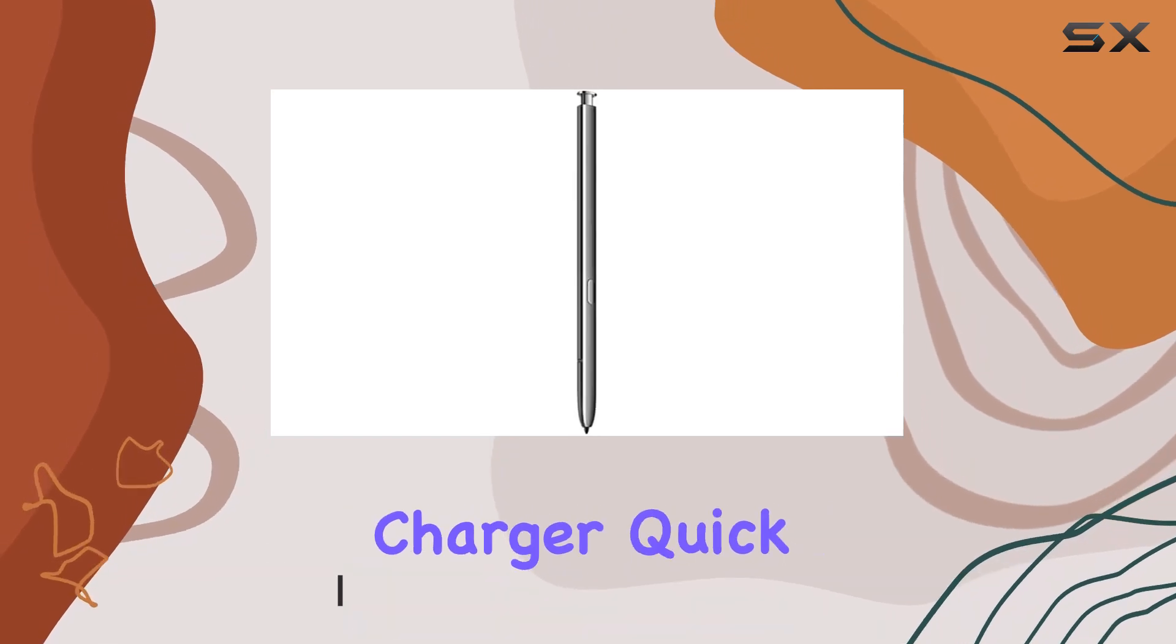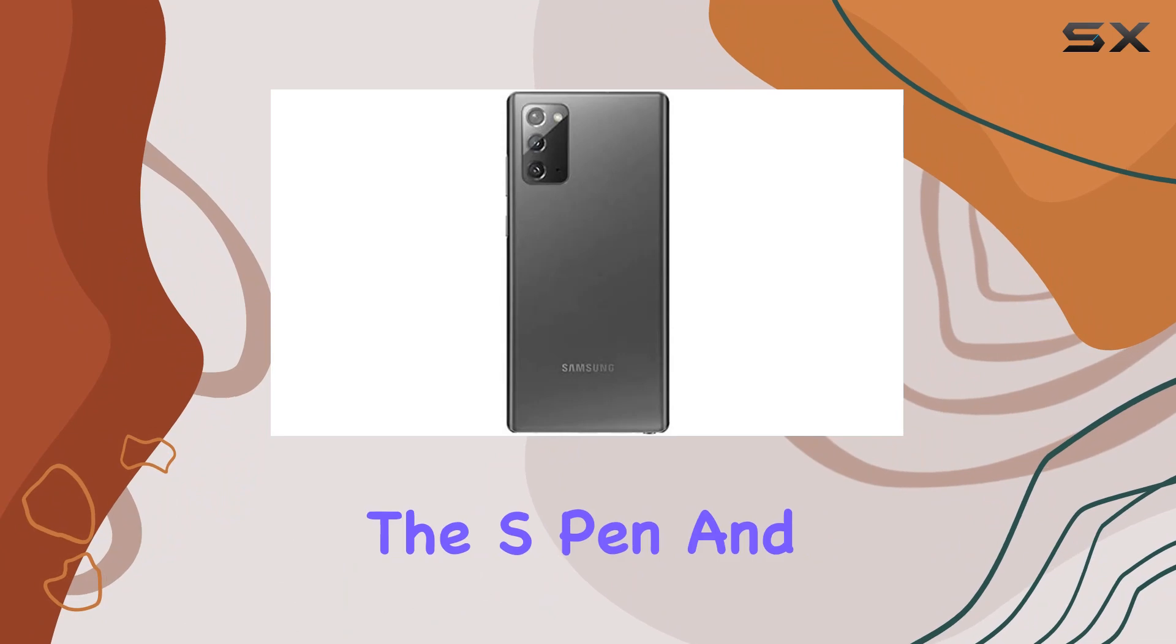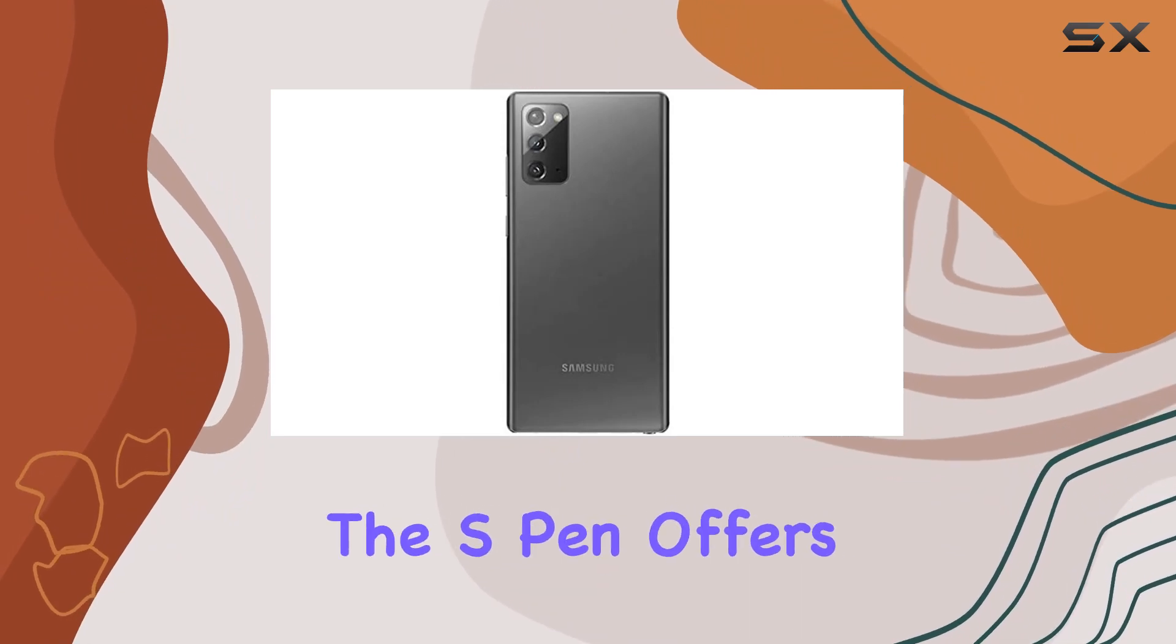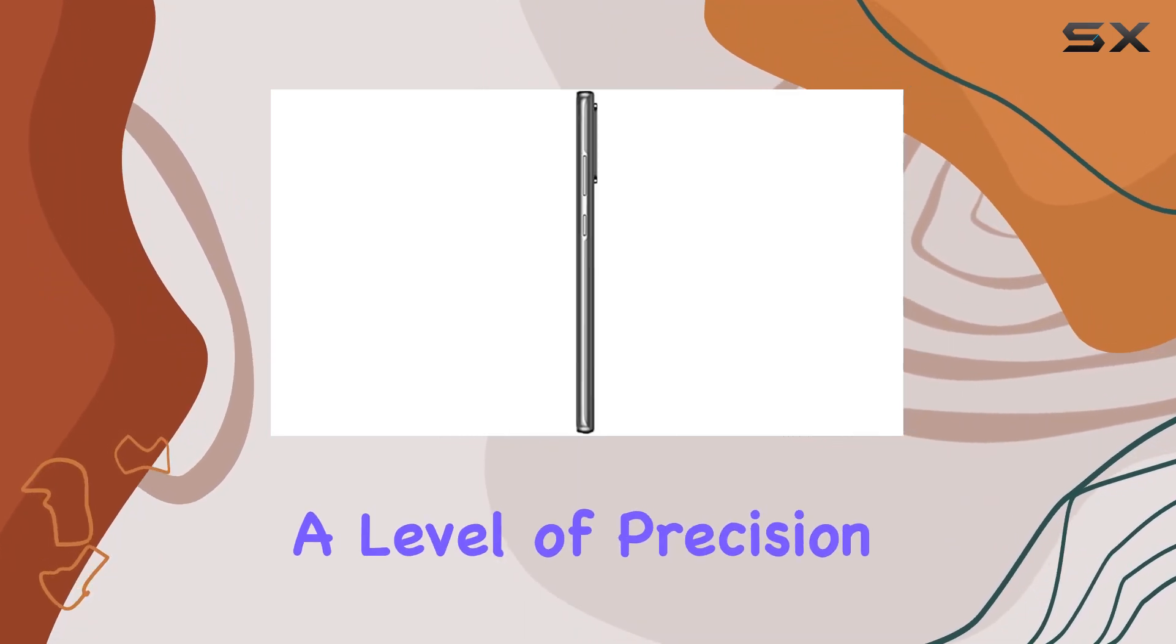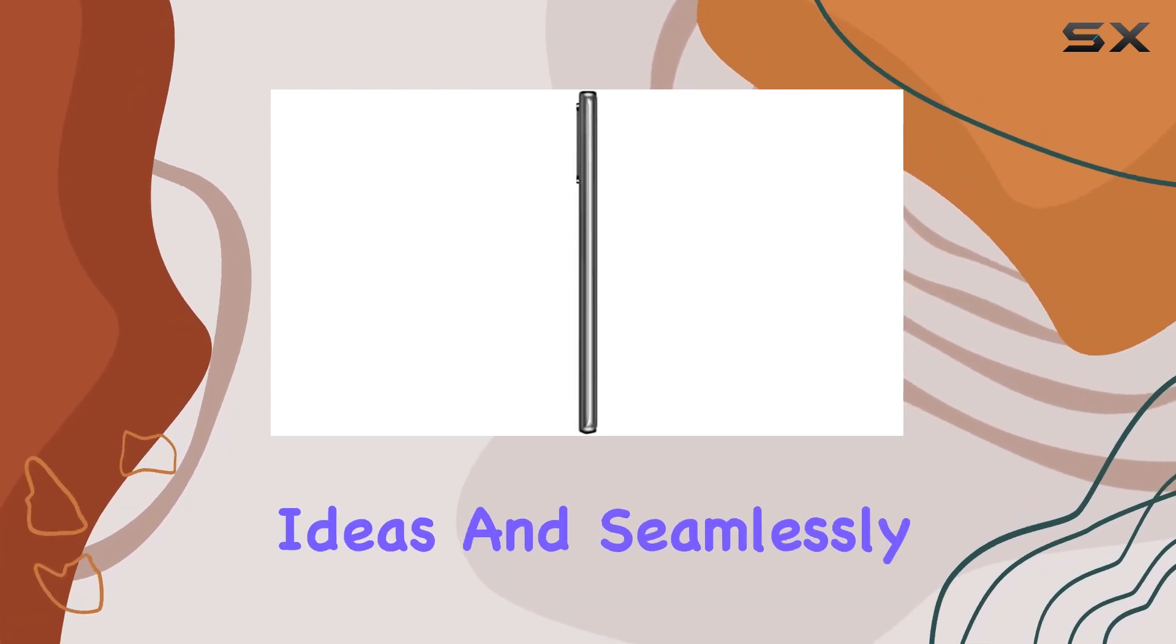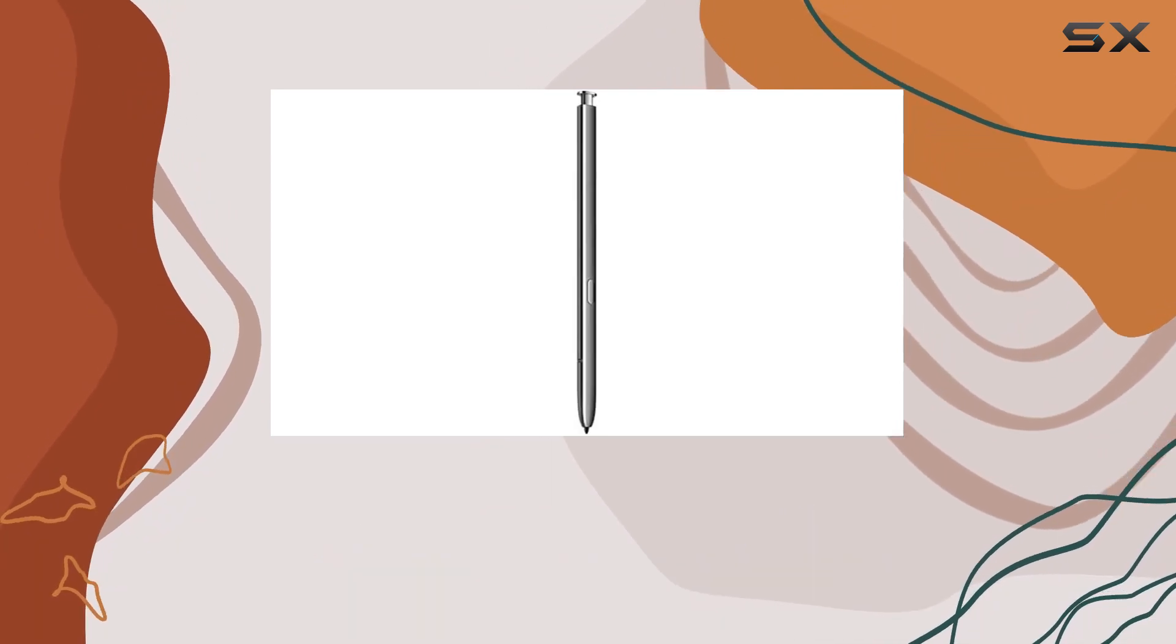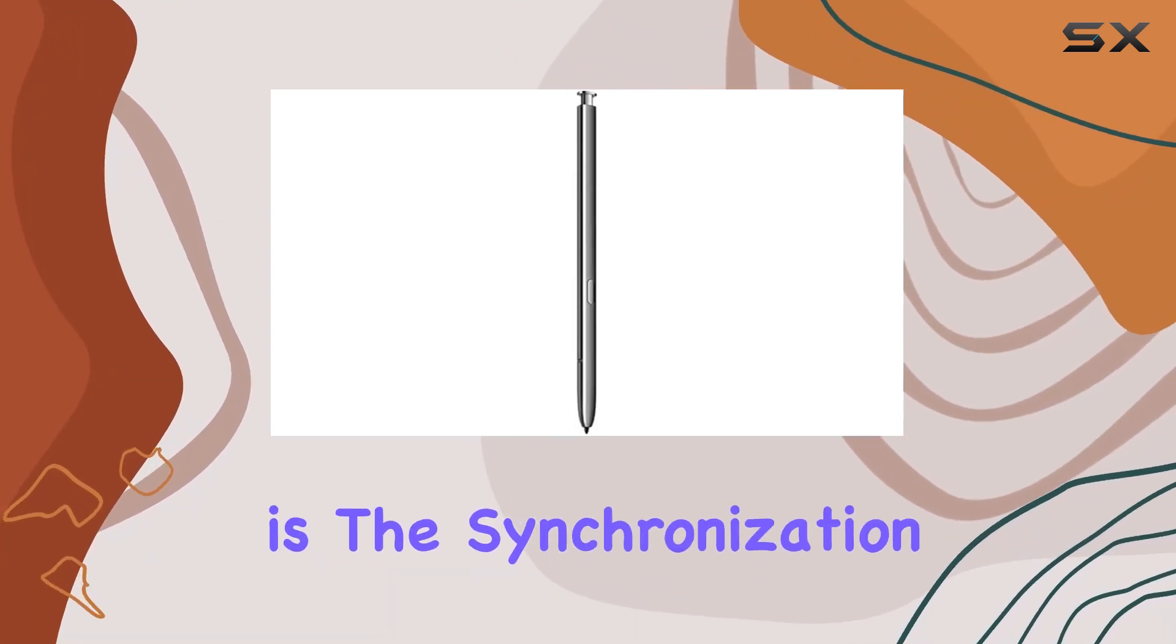The box includes an S Pen, wall charger, quick reference guide, and terms and conditions. Let's talk about the S Pen and Samsung Notes. The S Pen offers a level of precision that makes it feel like you're using a real pen. Jot down notes, sketch your creative ideas, and seamlessly convert them into Microsoft Word or PowerPoint. The beauty here is the synchronization across all your Galaxy devices, creating a truly connected experience.